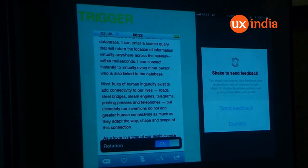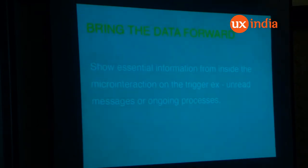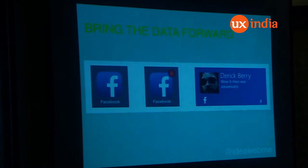Next is from Pocket — this is for the iOS app, they still don't have it for Android. The screen automatically rotates if your layout changes to horizontal. One principle here is 'bringing the data forward' — whatever essential information you have, put it forward on the trigger. It could be unread messages or ongoing processes. The Facebook app icon is a micro-interaction: when you click it, it takes you to the app. Taking it one step further, it shows a numeric notification badge. Windows takes it even further — it shows you the notification right then and there.